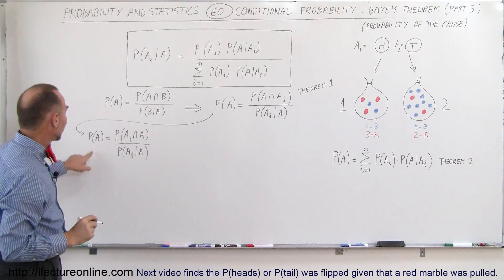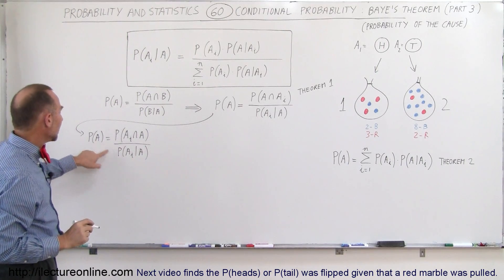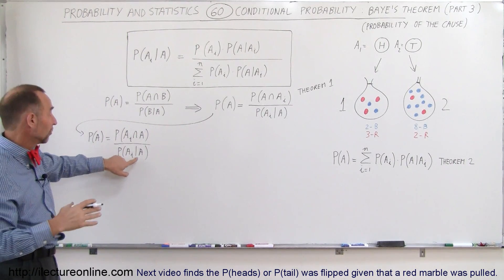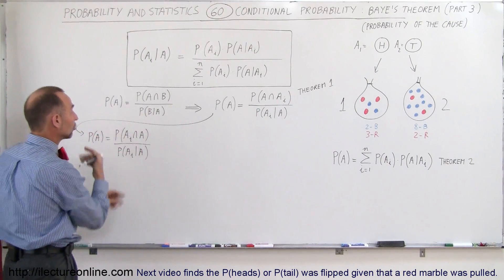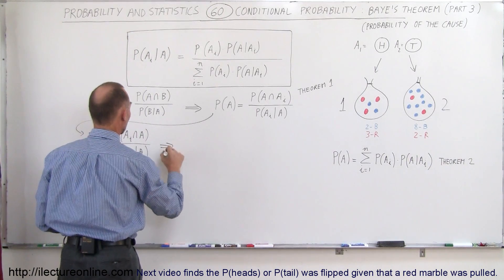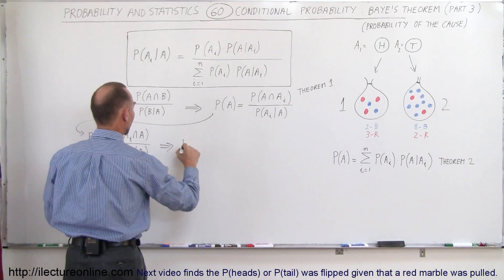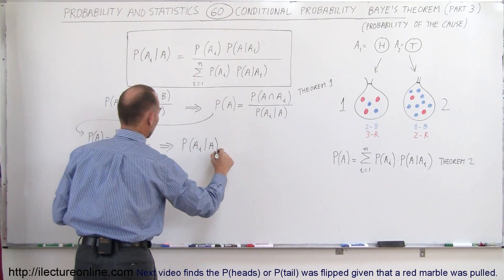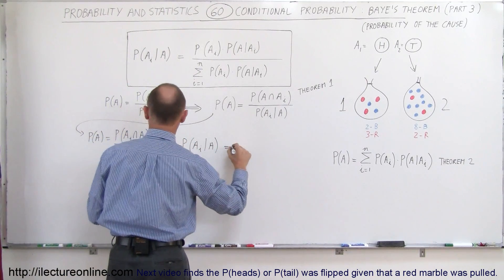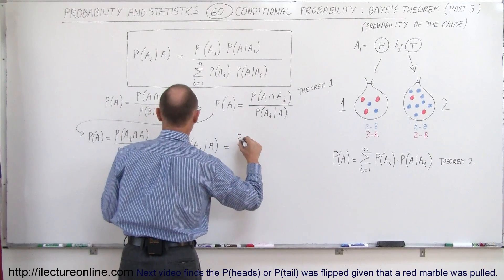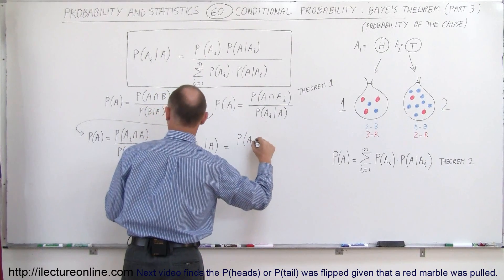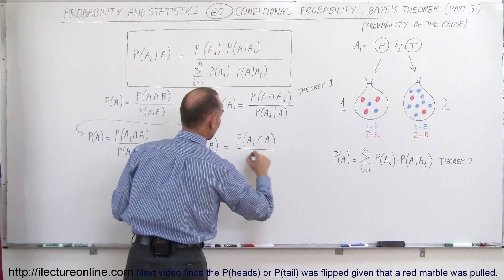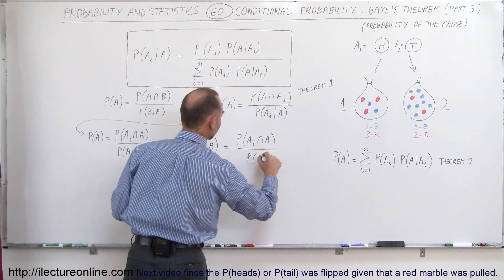You realize that P(A) and P(A sub i | A) can actually be interchanged. So we're going to write this as: the probability that A sub i will occur provided that A has occurred, equals the probability of A sub i intersected with A, divided by P(A).